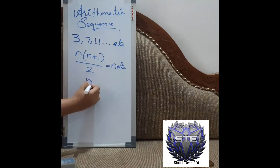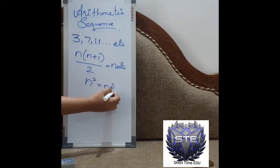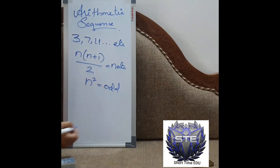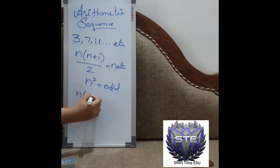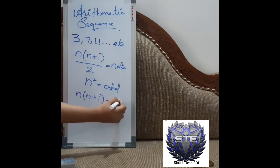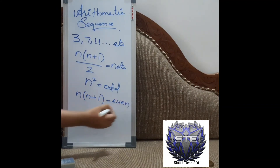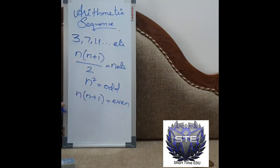For odd numbers, the formula for the sum of the first n odd numbers is n squared. For example, the sum of the first 10 odd numbers is 10 squared, which is 100. For even numbers, the formula is n into n plus 1. This is the formula for finding the sum of the first n even numbers.